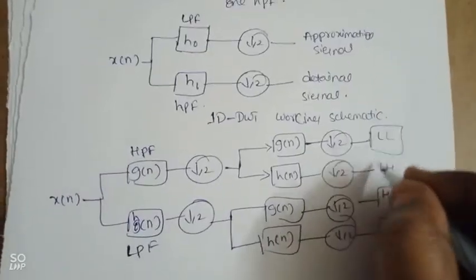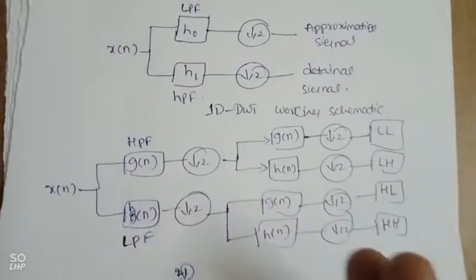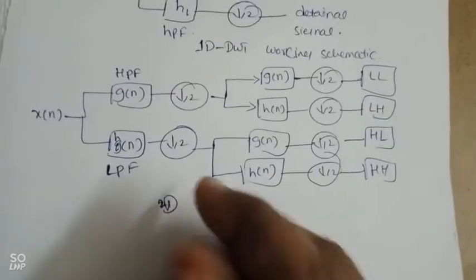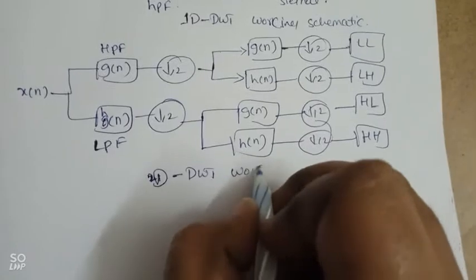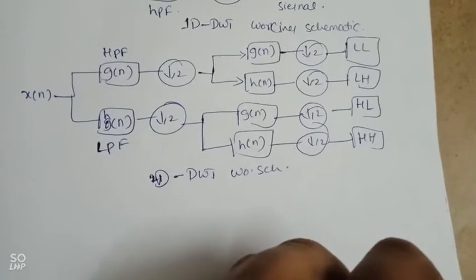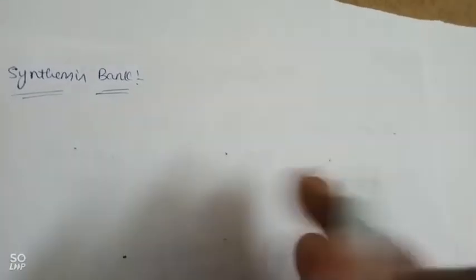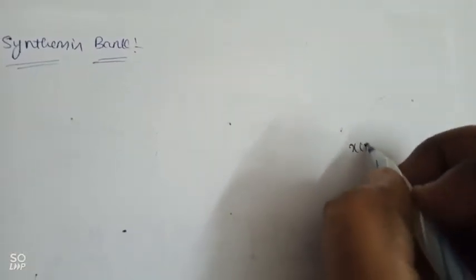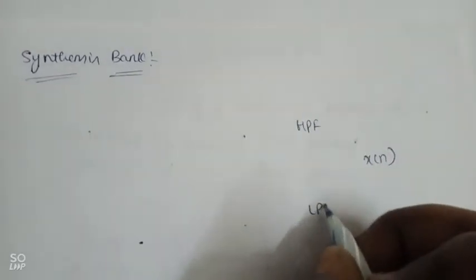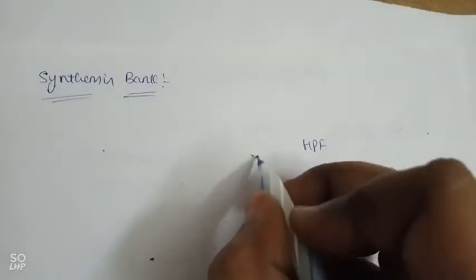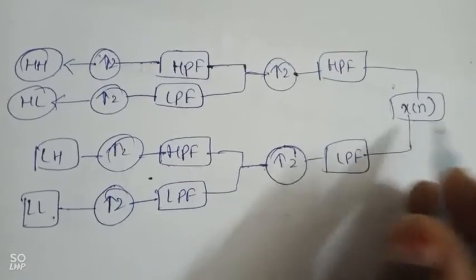Next is the two-dimensional discrete wavelet working schematic. In the synthesis bank, the reverse process is applied. The synthesis bank takes the high pass and low pass filtered outputs and performs up-sampling.